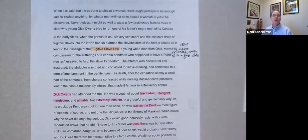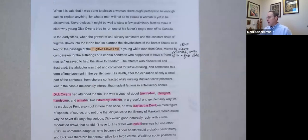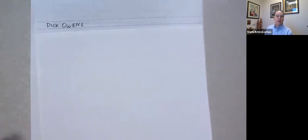When it is said that it was done to please a woman, there ought perhaps to be enough said to explain anything. For what a man will not do to please a woman is yet to be discovered. Interesting, very clever opening sentence here. Nevertheless, it might be said to state a few preliminary facts to make it clear why young Dick Owens tried to run one of his father's Negro off to Canada. So here we go. We haven't really encountered, we haven't met Dick Owens yet, but I've gone ahead and started a character page for him.